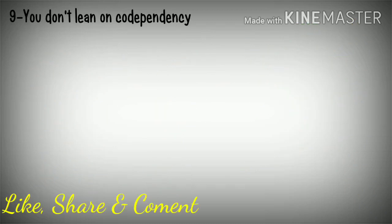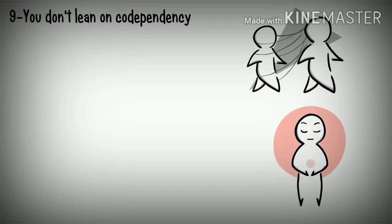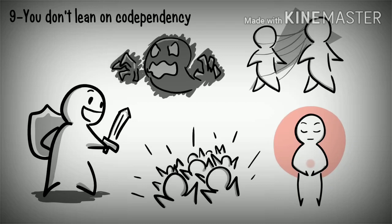9. You don't lean on codependency. Codependency occurs when you don't have a strong sense of self and rely on others for validation. When you practice self-sufficiency, find happiness from within, and learn how to deal with your problems alone, you allow others to support you, not rescue you. In turn, this strengthens your relationships when you don't manipulate or possess others to help you.